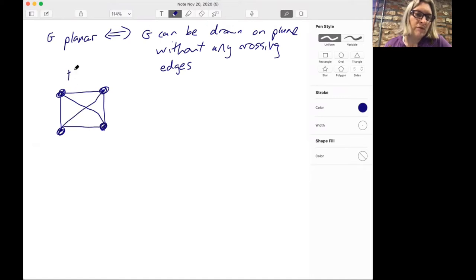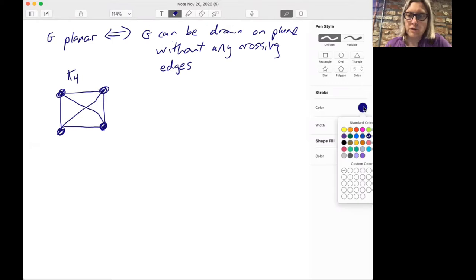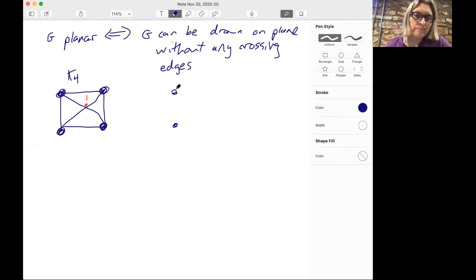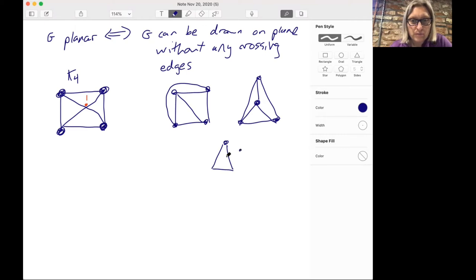For example, here's the graph K4, and it's drawn with crossing edges. But we can redraw the graph of K4 by just moving this edge up and over. And this is the same graph. Sometimes people like to draw this graph even more symmetrically. Here's also a graph of K4. And sometimes people like to draw it as the tetrahedron graph. This is not planar, but this is another way of thinking about K4.